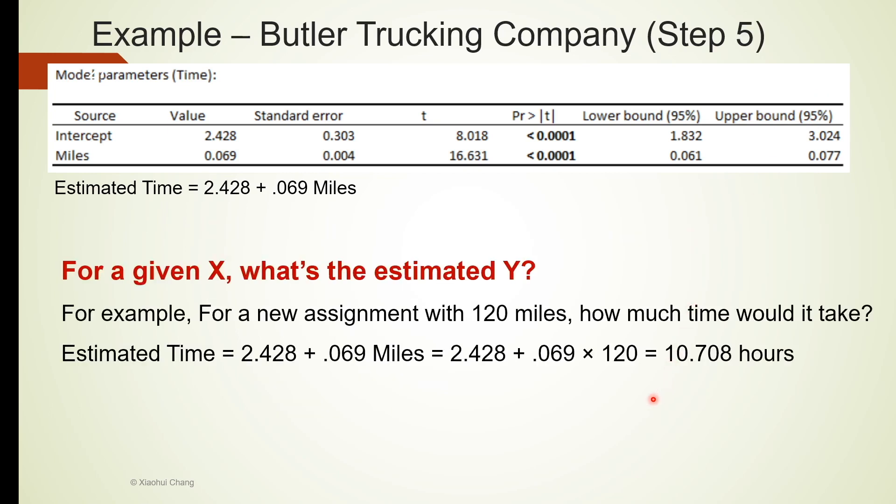One of the most useful applications of regression analysis is to do predictions. Because we have the estimated linear equation that connects miles with time, if we have another assignment that involves 120 miles of driving, how much time would this assignment take on average? We know that miles is 120, which means x is 120. We can plug this number into the equation and keep all other numbers the same. We obtained 10.708 hours.